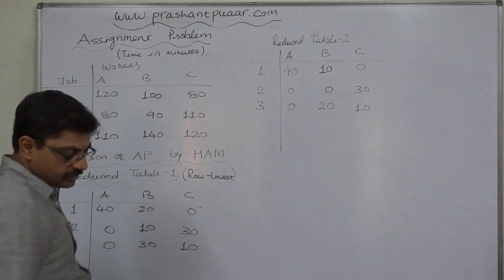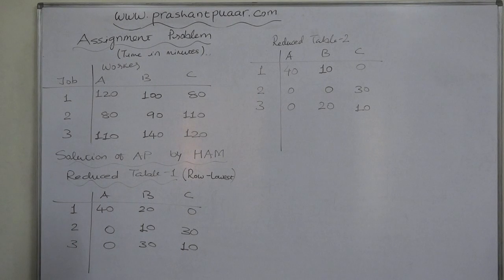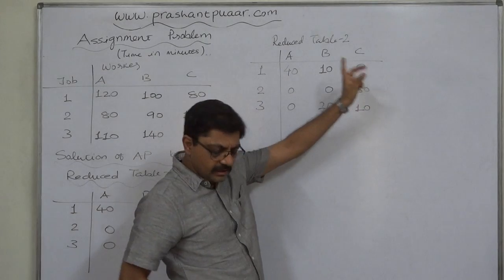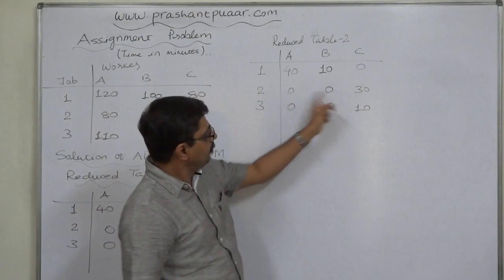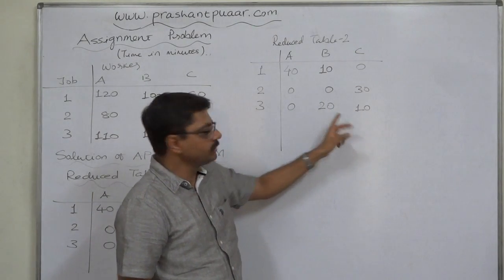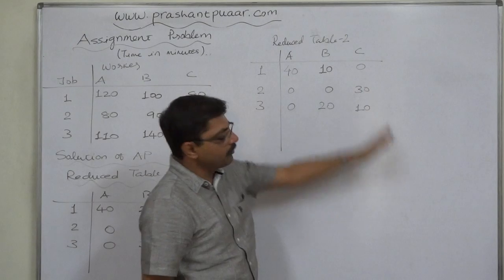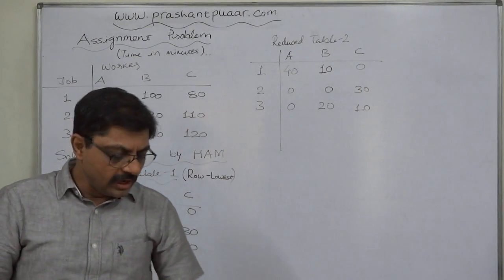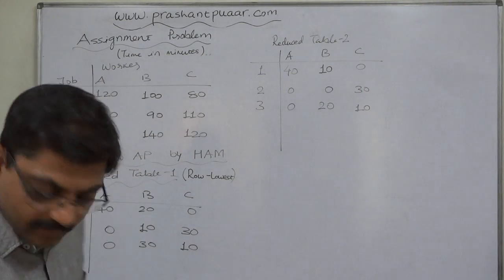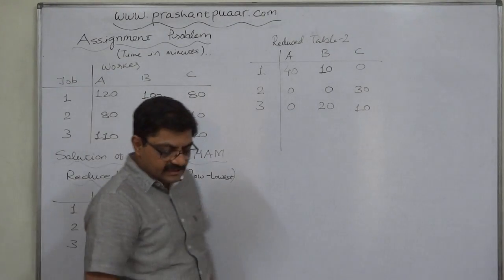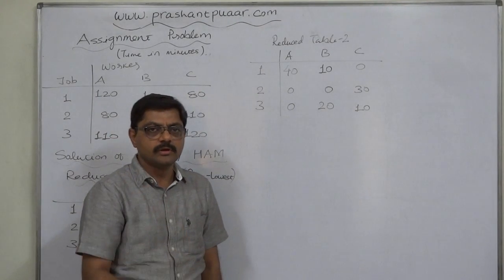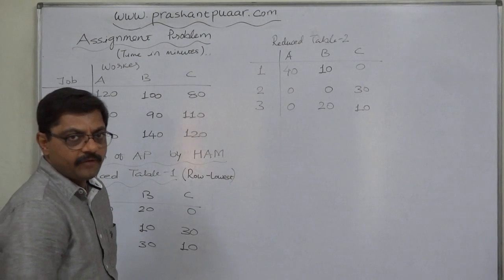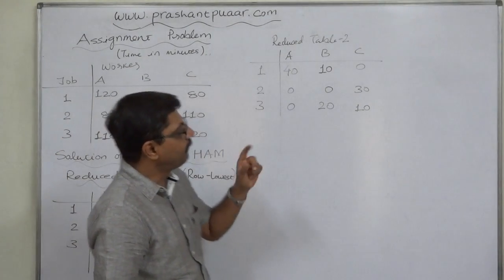This is reduced table 2. Now check whether we have at least one zero in each row and each column. In the last table we have one or more zeros in all rows and all columns, so now we can proceed to making assignments. To make assignments to the last reduced table, we follow a few simple rules.